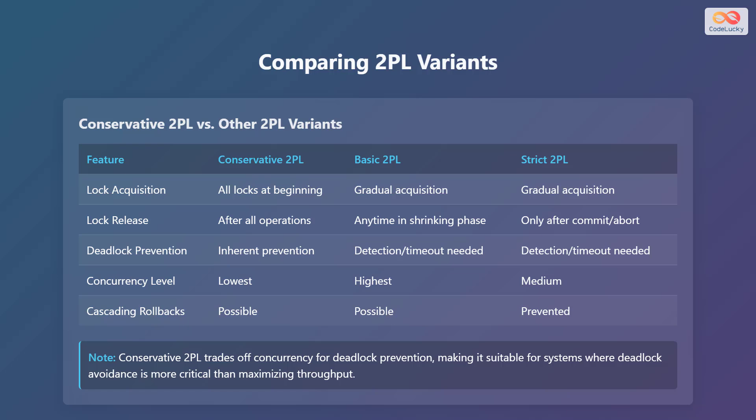Here is a comparison of conservative two-phase locking with other variants such as basic two-phase locking and strict two-phase locking. In conservative 2PL, lock acquisition happens all at the beginning, whereas gradual acquisition occurs in basic and strict 2PL. Lock release occurs after all operations in conservative 2PL, but happens anytime in the shrinking phase in basic 2PL, and only after commit or abort in strict 2PL. Deadlock prevention is inherent in conservative 2PL, but detection or timeout is needed in basic and strict 2PL. Conservative 2PL has the lowest concurrency level, basic 2PL has the highest, and strict 2PL has a medium level. Cascading rollbacks are possible in conservative and basic 2PL, but are prevented in strict 2PL.